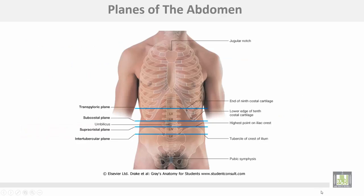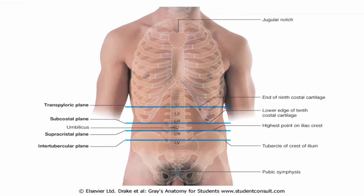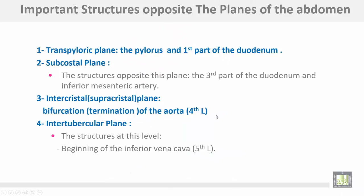These are the different planes: the transpyloric, the subcostal, the supracrystal, and the intertubercular.